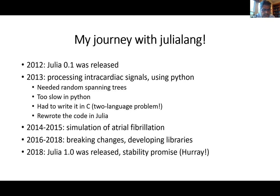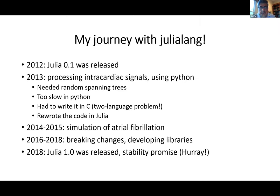Then I switched to Julia and could write the whole thing in one language. I then worked on simulation of atrial fibrillation — getting a CellML model, using a PDE to solve a 3D model. Between 2016 and 2018 I avoided Julia because it was undergoing very fast changes with lots of breaking releases. But in 2018 Julia 1.0 was released with a stability promise — no more breaking changes — and it became much more usable.